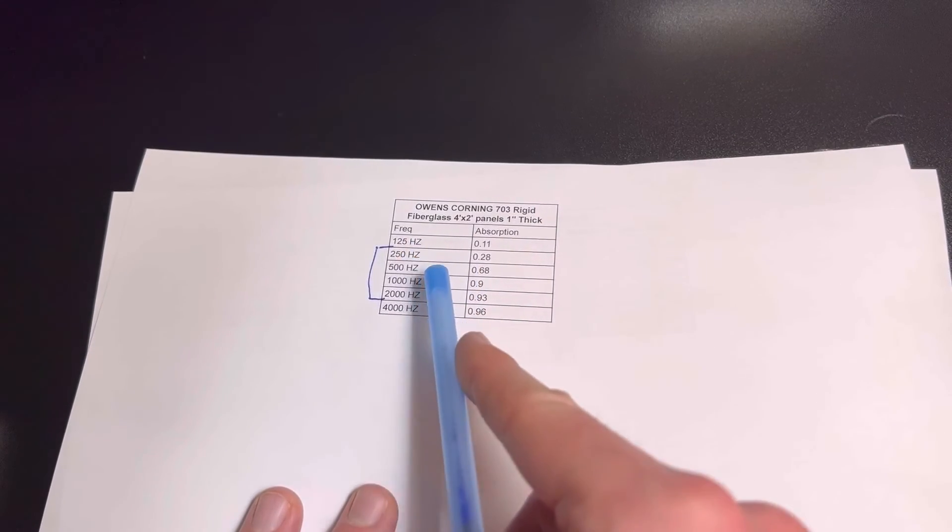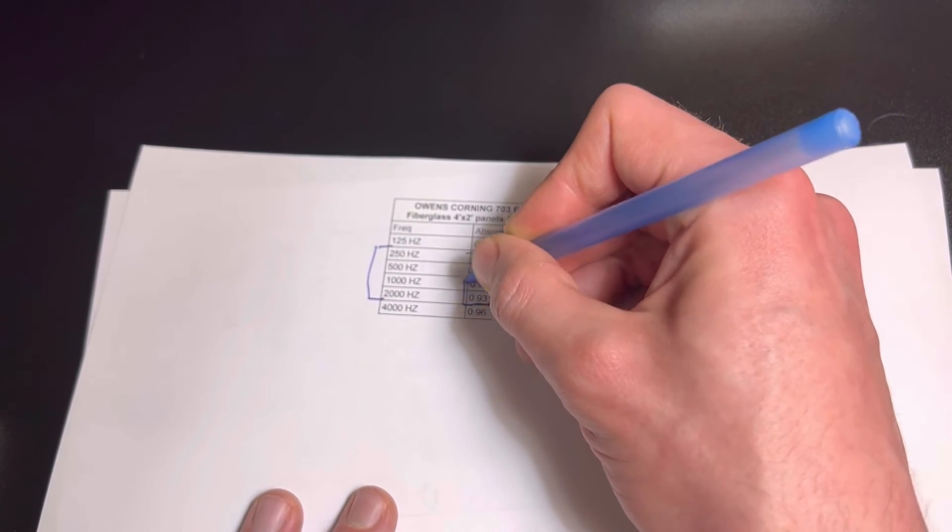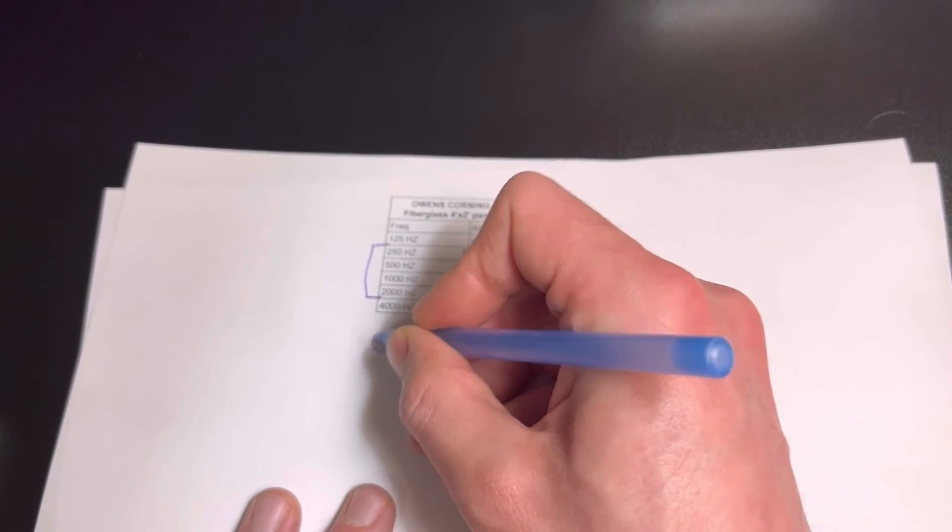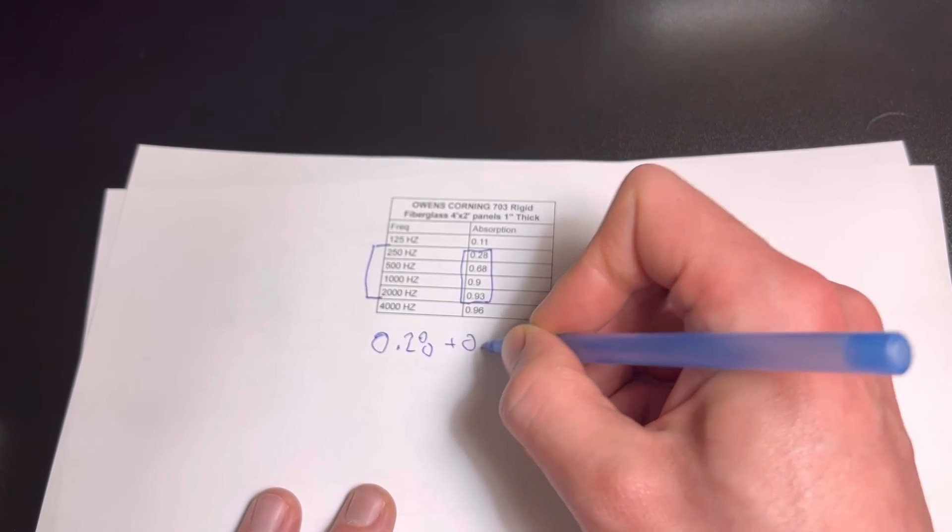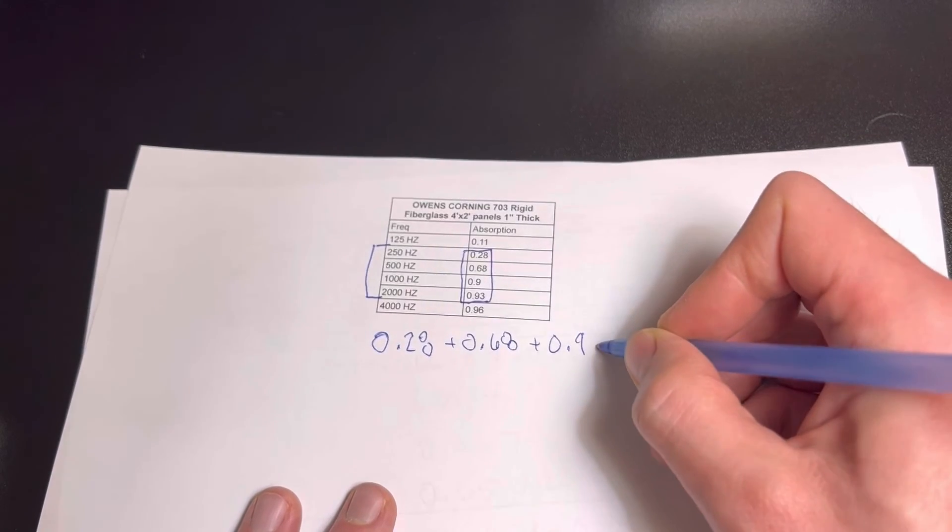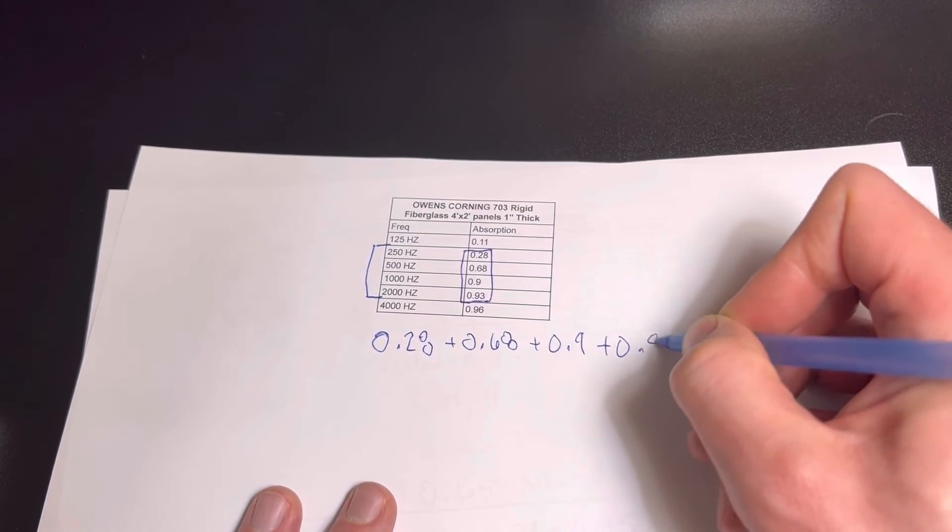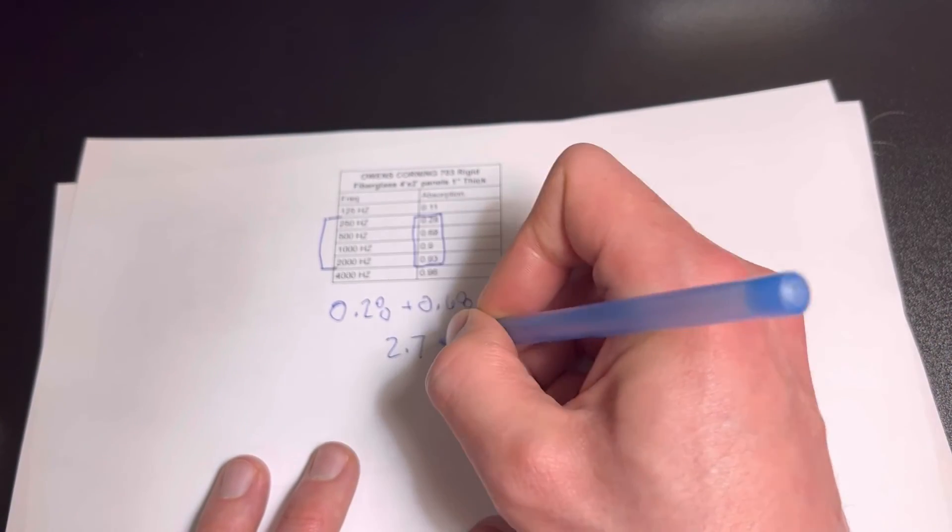So the same thing here: 250, 500, 1000, 2000. We're going to take those numbers and add them up. So 0.28 plus 0.68 plus 0.9 plus 0.93 is going to give us 2.79.